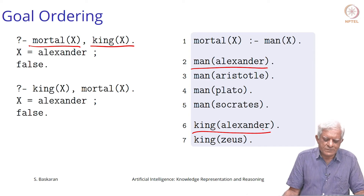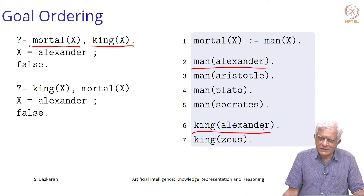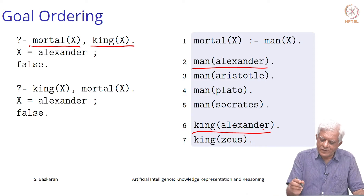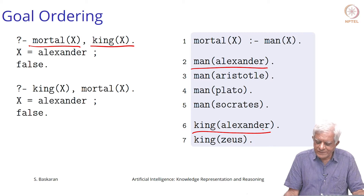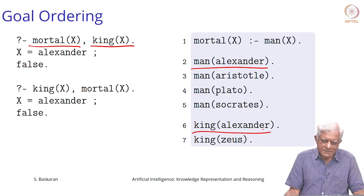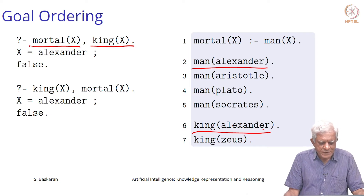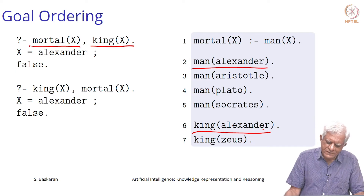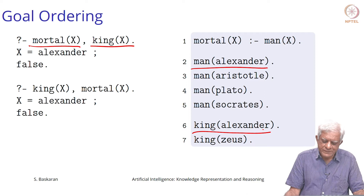Welcome back. We have been talking about mortals and kings and mortal kings. We have seen this small database in which there are four persons: Alexander, Aristotle, Plato, and Socrates. There are two kings in our knowledge base: Alexander and Zeus. If we ask a query 'is there someone who is mortal and who is a king?' the program comes back and says x is Alexander. If you ask with a different order 'is there somebody who is a king who is mortal?' it again says x is equal to Alexander.